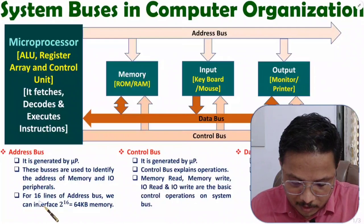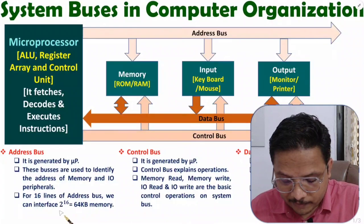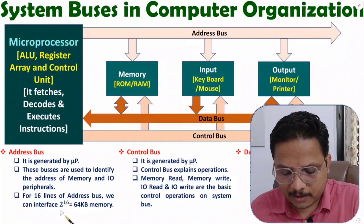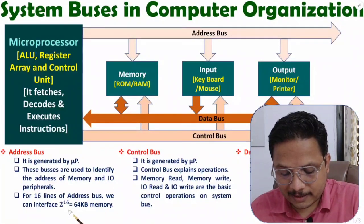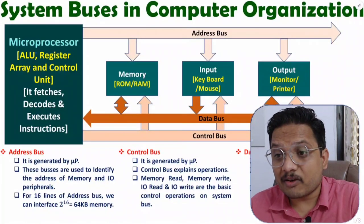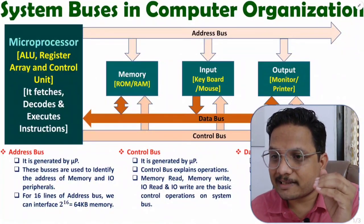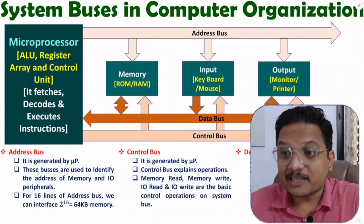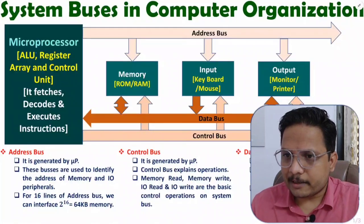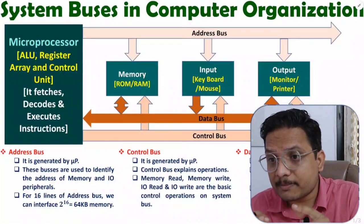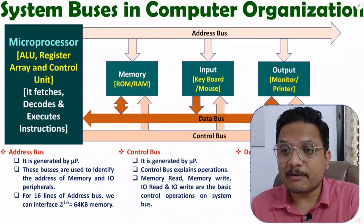One example has been shown here. With 16 lines of address bus, what will be the maximum size of memory that could be interfaced? 2 to the power of 16, which equals 2 to the power of 10 multiplied by 2 to the power of 6. 2 to the power of 10 is kilo and 2 to the power of 6 is 64 — so 64K size of memory can be interfaced if you have 16 address lines. The address bus is generated by the microprocessor or CPU, and it explains the maximum size of memory we can interface as well as how many IO devices we can interface.